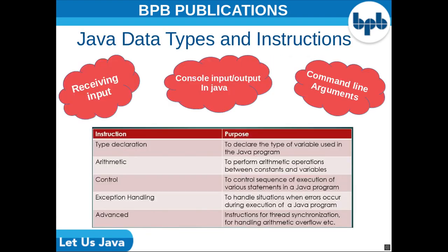Now that we have written a few programs, what are the instructions we have used? There are basically five types of instructions in Java: type declaration, arithmetic instruction, control instruction, exception handling, and advanced instruction. You can get a detailed description about each in the book. Then we have console input and output in Java, which is to receive input from the keyboard and send output to the screen. For this we have functions like the readLine function, which reads a line of characters entered from the keyboard until enter is hit, and the println function which sends output to the screen.